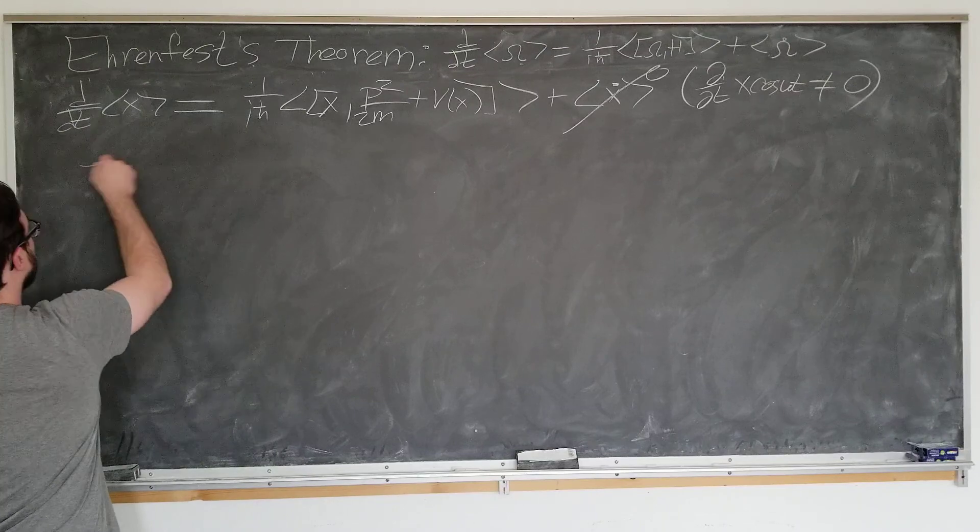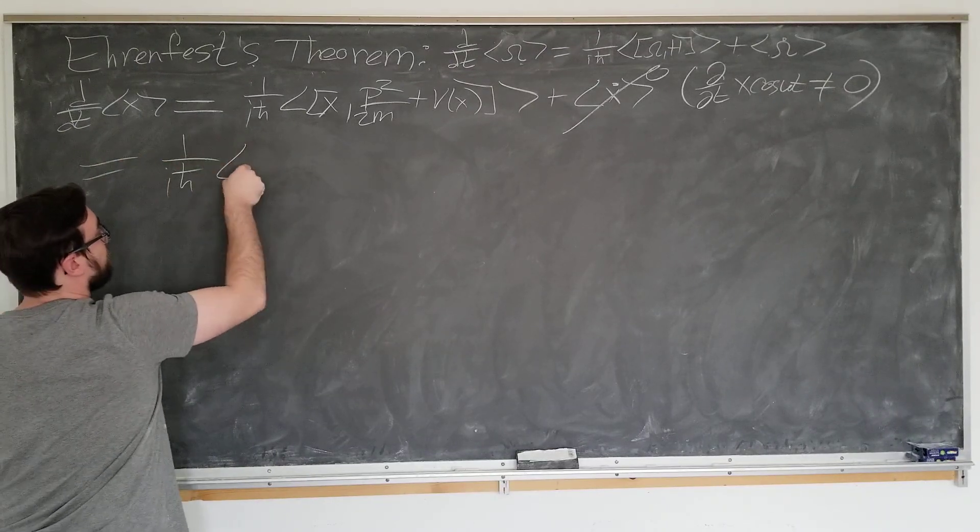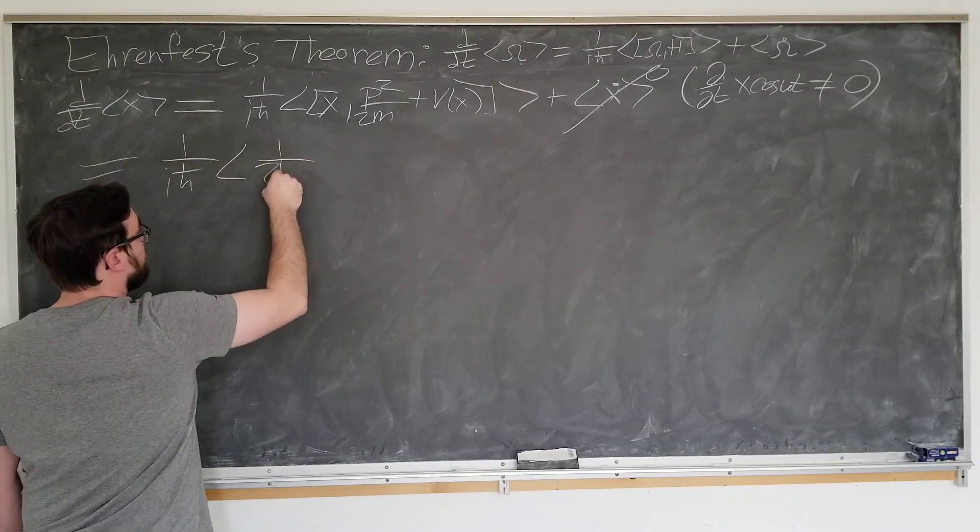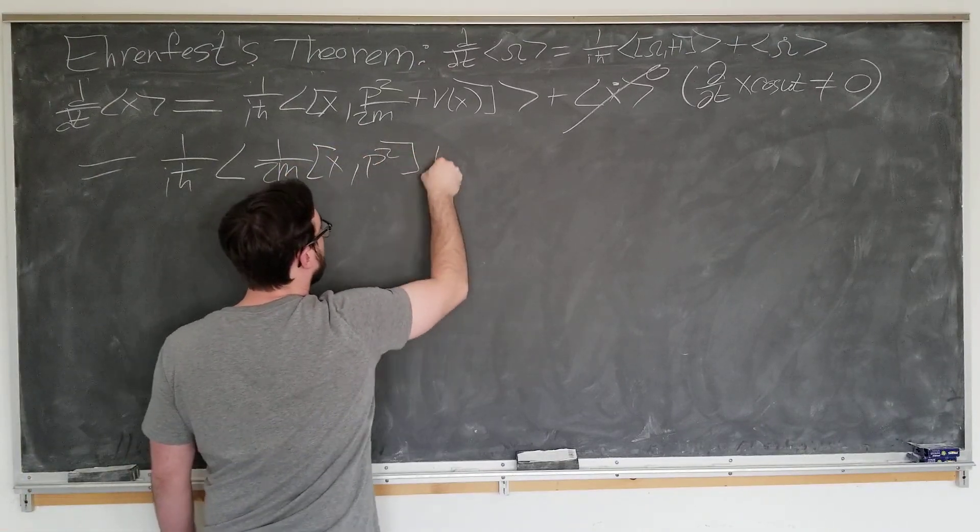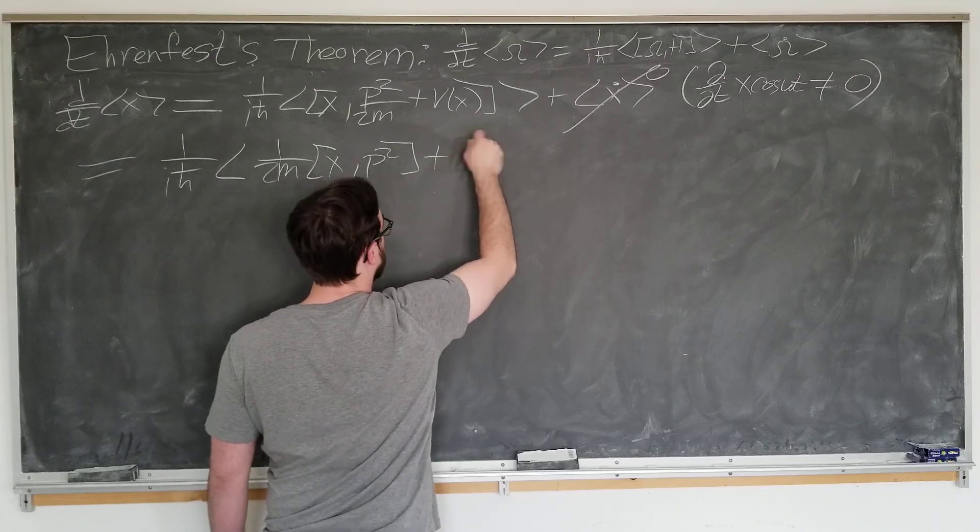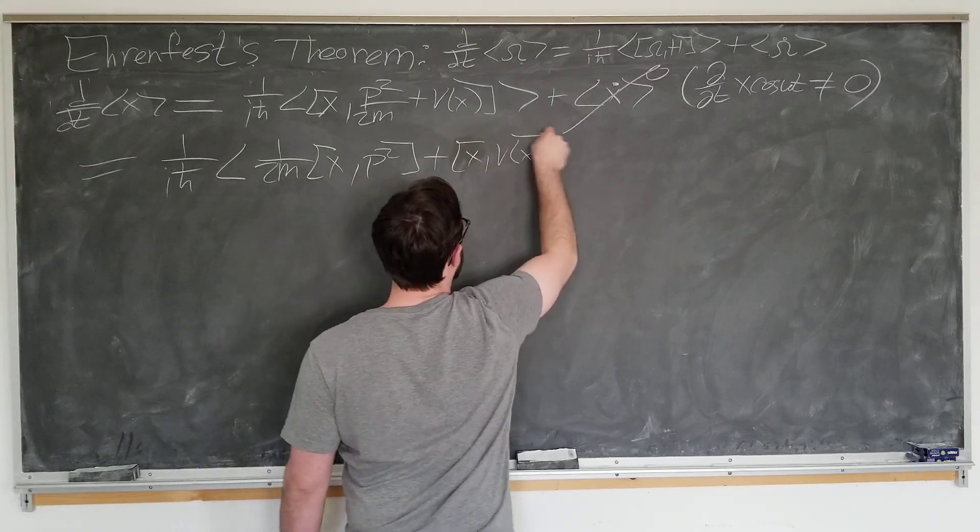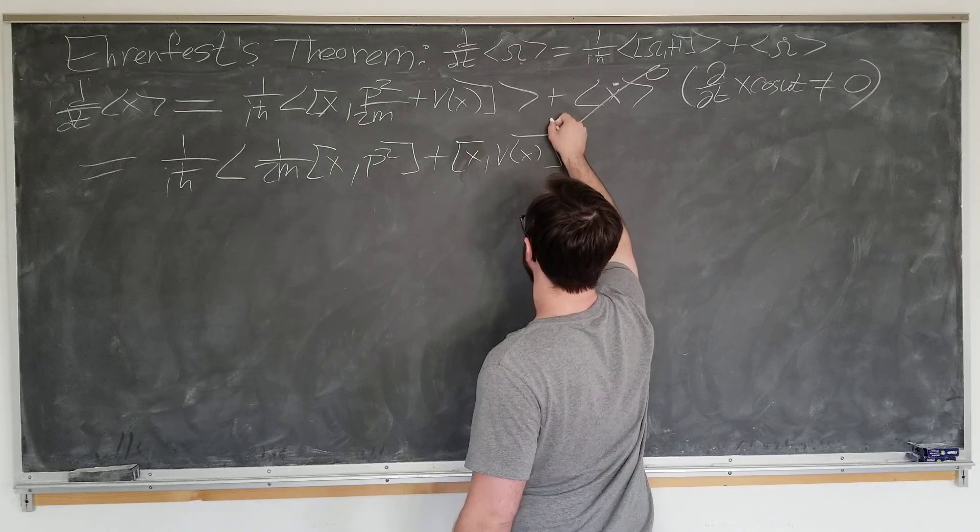Let's go ahead and simplify this: one over i h bar, expectation value, one over 2m, x with p squared, plus x with v of x, and bracket.